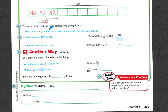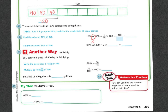The model shows that 100% represents 400 gallons. 30% is three groups of 10%, so if you divide the model into 10 equal groups, to find the value of 10% of 400, you have 10% of 400. Anytime you see the word 'of', it means to multiply. So 10% of 400 is saying 10% times 400.